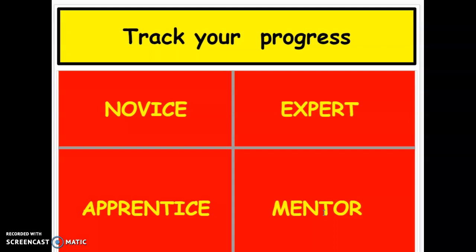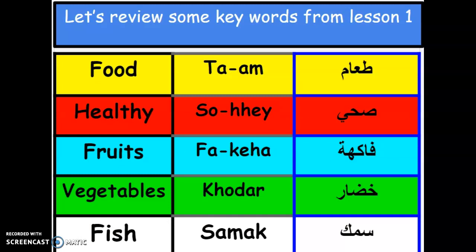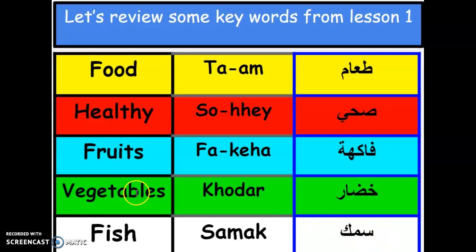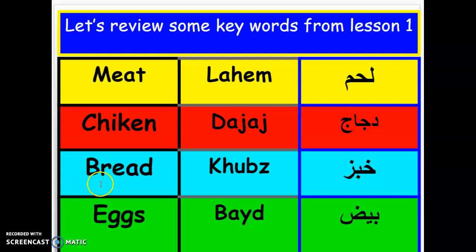Let's review some keywords from lesson one that we already studied. Ta'am, ta'am. Sahi, sahi. Fakiha, fakiha. Khudar, khudar. Samak, samak. Let's go through them again: ta'am, sahi, fakiha, khudar, samak.